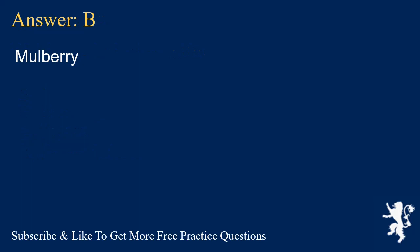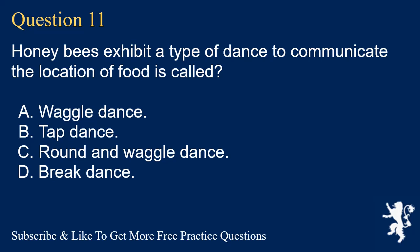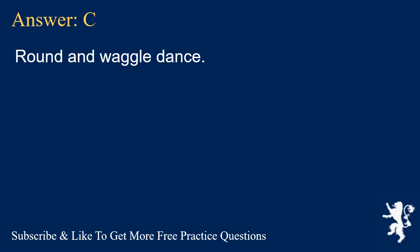Question 11. Honey bees exhibit a type of dance to communicate the location of food. This is called? A. Waggle dance. B. Tap dance. C. Round and waggle dance. D. Break dance. Answer: C. Round and waggle dance.